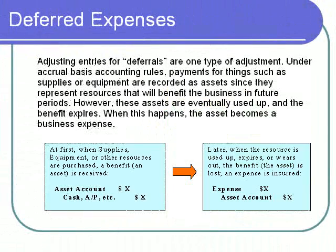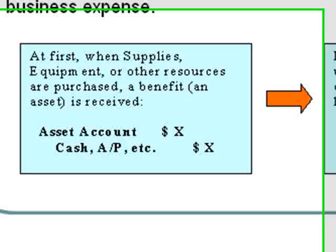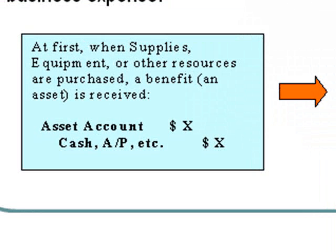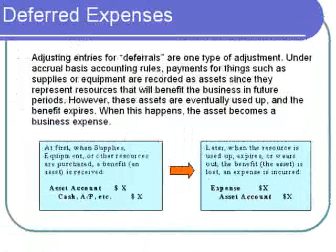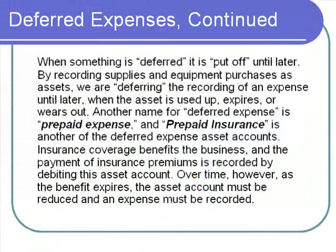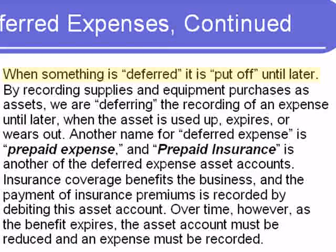Adjusting entries for deferrals are one type of adjustment. Under accrual basis accounting rules, payments for things such as supplies or equipment are recorded as assets, since they represent resources that will benefit the business in future periods. However, these assets are eventually used up and the benefit expires. When this happens, the asset becomes a business expense. When something is deferred, it is put off until later. By recording supplies and equipment purchases as assets, we are deferring the recording of an expense until later, when the asset is used up, expires, or wears out.